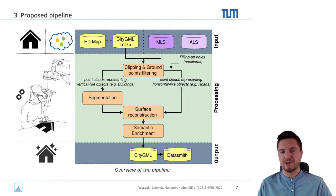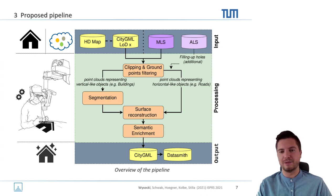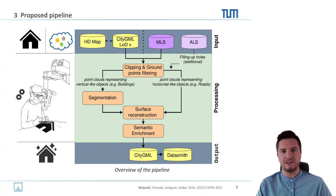In the proposed pipeline, we add an HD map and CityGML together with point clouds from MLS and ALS. These are then processed in the processing segment, where parameters control elements such as segmentation, surface reconstruction, and semantic enrichment. The output yields enriched CityGML models and also the Datasmith format, which serves simulation engines like automated driving simulators.